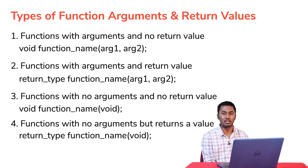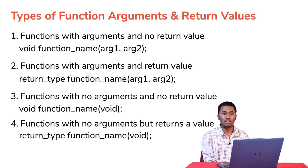There are four types of function arguments and return values in C programming. The first type is functions that have arguments but do not return a value. Second is functions that have both arguments and a return value. Third is functions that do not have both arguments and a return value. Fourth is functions that have no argument but have a return value.